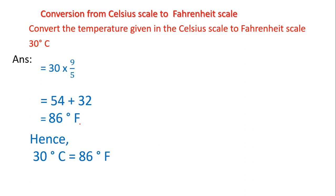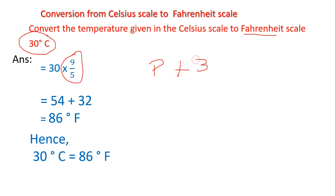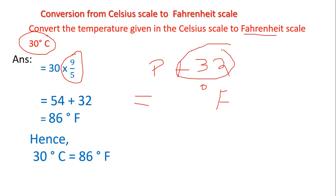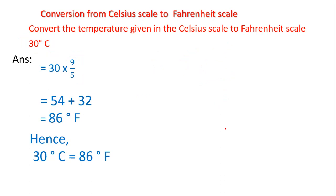Let's quickly recap the steps to convert Celsius to Fahrenheit. First, multiply the given temperature with 9/5. After getting the product, add 32 to that product — the sum will give you the temperature in Fahrenheit. Remember these two steps: multiply with 9/5, then add 32 to the product, and you will get the answer in Fahrenheit.